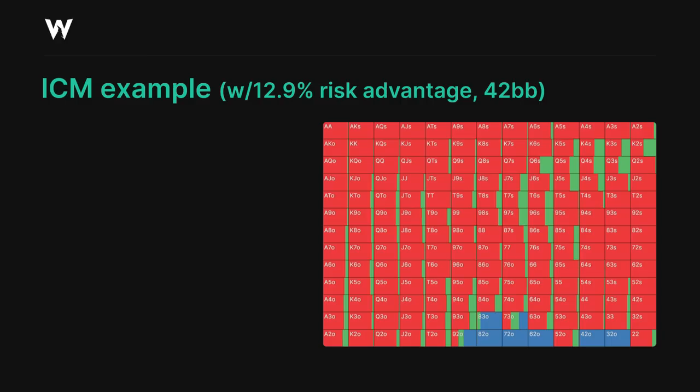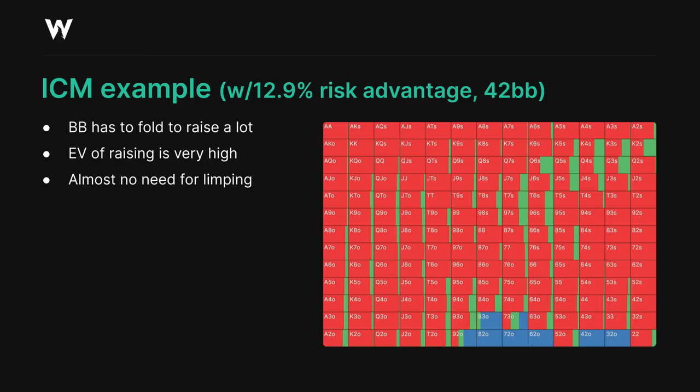In this first one, it's a six-handed final table spot where the small blind has a huge risk advantage of 12.9% over the big blind, at 42 big blind effective stacks. Here, the small blind's risk advantage means the big blind has to fold a disproportionately high number of hands versus a raise, so the limping option becomes almost irrelevant in this case. The small blind is essentially playing raise or fold and could easily justify removing limping from their strategy entirely here.